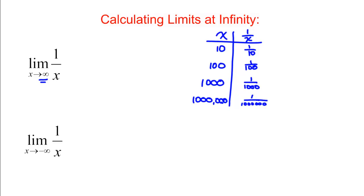You can see that the bigger X gets, the smaller 1 over X gets, and 1 over X appears to be approaching zero.